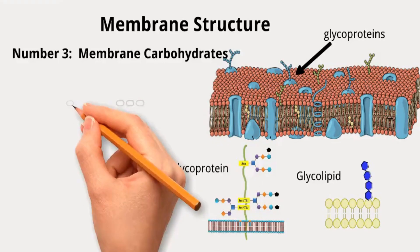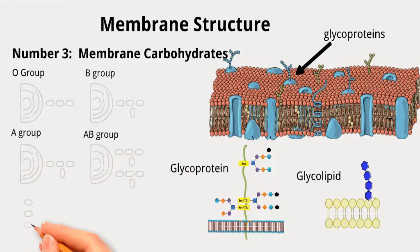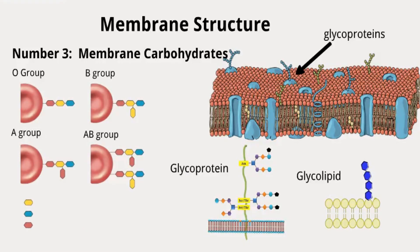An interesting example of the importance of carbohydrates in membranes is the ABO blood group system. The carbohydrates of glycolipids in the red blood cell plasma membrane determine a person's blood type — whether it's A, B, AB, or O. Blood type A adds N-acetylgalactosamine, blood type B adds galactose, blood type AB has both enzymes, and blood type O lacks the enzymes for these terminal sugar additions. The exact function of these ABO blood group antigens remains a mystery.